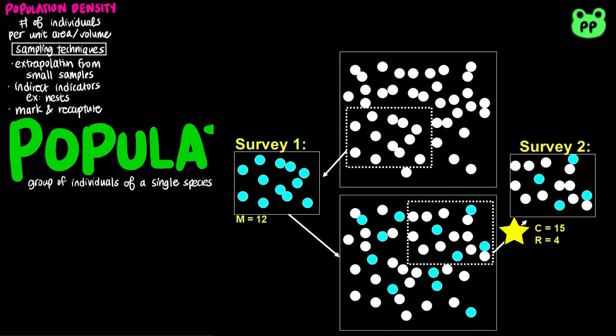Later, another portion will be captured, and the number of marked individuals within the sample will be counted. This method assumes that marked and unmarked individuals have the same probability of being captured and sampled. Therefore, the total population size can be obtained by dividing the number of marked individuals by the proportion of marked individuals in the second sample.